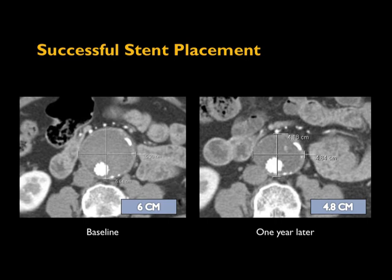This is what you expect to see in normal post-operative findings from a successful stent placement: an aneurysm that was 6 centimeters at baseline should shrink to about 4.8 centimeters at follow-up. That's normal and indicates a good, successful aneurysm repair.